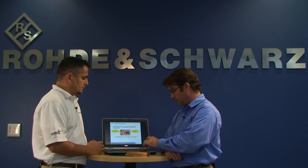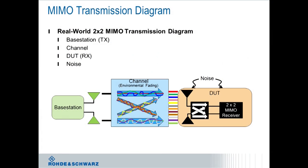From an antenna perspective in particular, in order to achieve best MIMO performance, you want to design the antennas so that they are as uncorrelated as possible. From a MIMO transmission diagram, you have the device under test with, again, the two key components: the antennas with their inherent correlation.